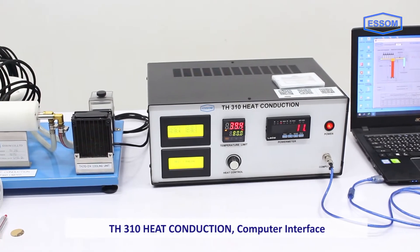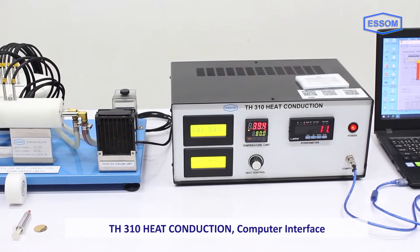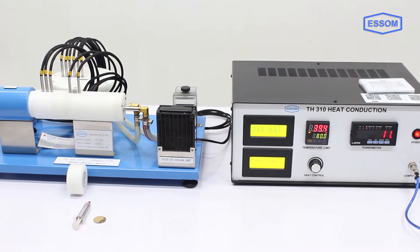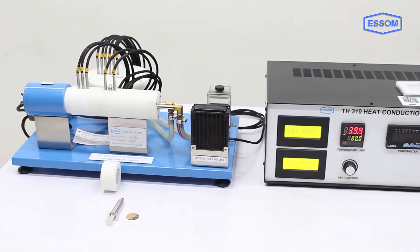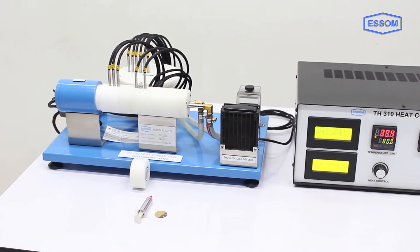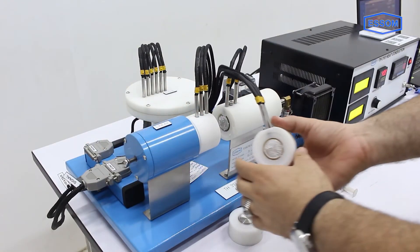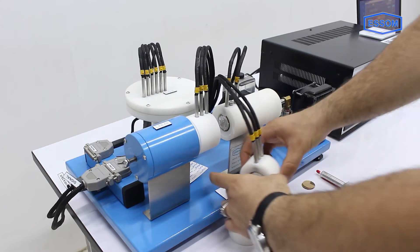TH 310 heat conduction computer interface. The unit consists of two parts: a multi-section bar for linear heat conduction studies and a metal disc for radial heat conduction studies.